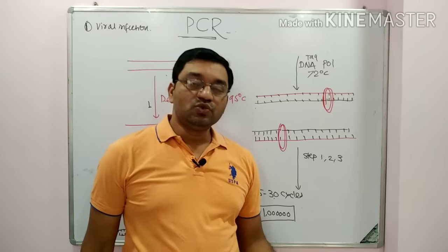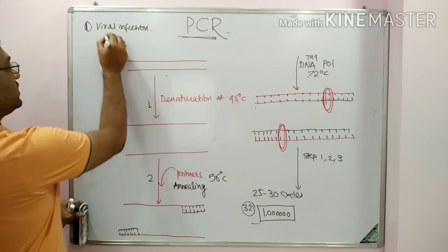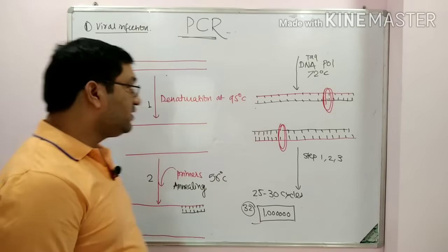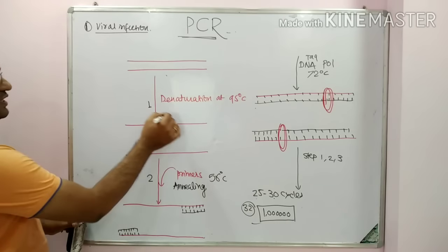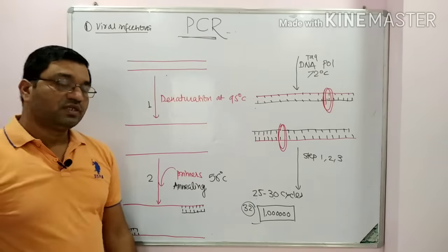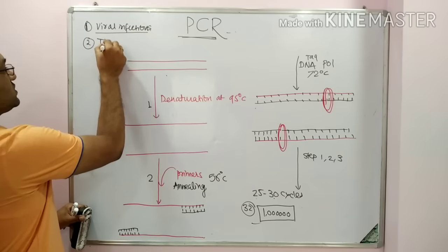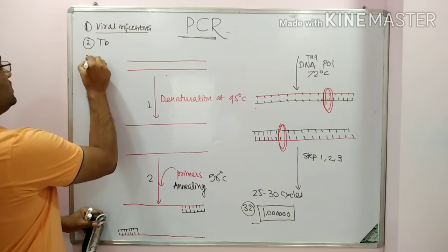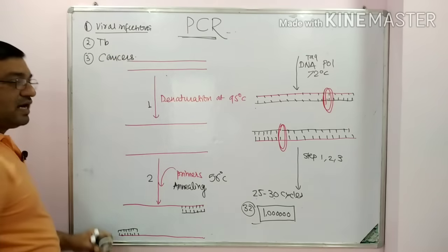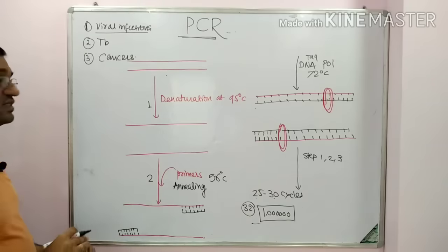PCR is used for detection of viral infections such as HIV and SARS-CoV-2. It is also useful for detection of tuberculosis, that is Mycobacterium tuberculosis. Third, it is used for detection of various cancers — for example, human papillomavirus causes cervical cancer, so PCR is useful in the detection of various cancers.